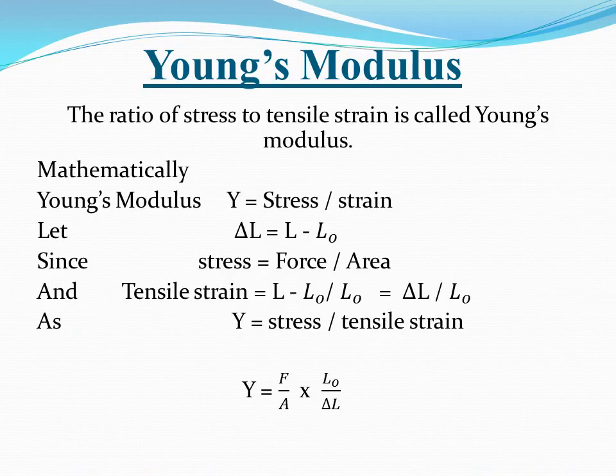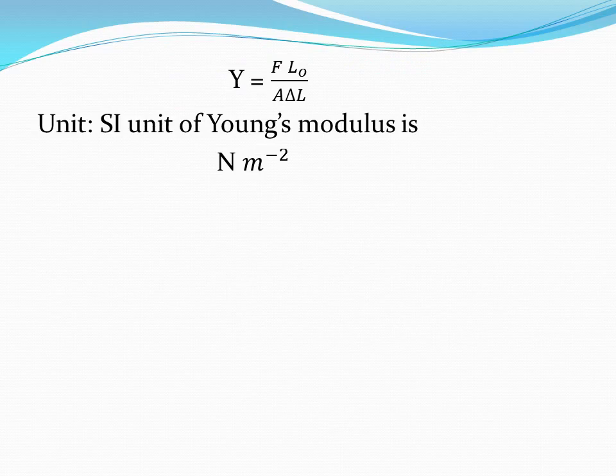Young's modulus is the ratio of stress to tensile strain. Mathematically, Young's modulus Y = stress / strain. Since stress = F/A and tensile strain = ΔL/L₀, we get Y = (F/A) × (L₀/ΔL), or Y = FL₀ / (A·ΔL). Its unit is newton per meter squared.